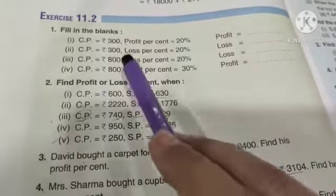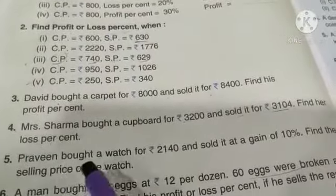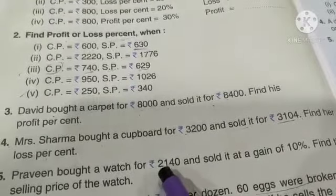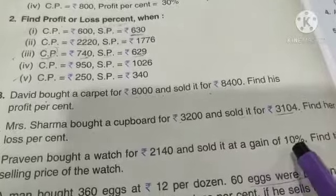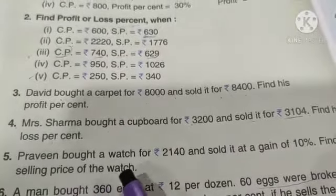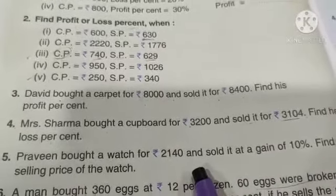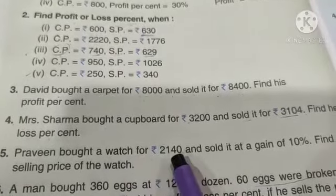Students, question fifth, exercise 11.2. Praveen bought a watch for 2140 rupees and sold it at a gain of 10%. Find the selling price of the watch. What has happened to us? What does it mean?